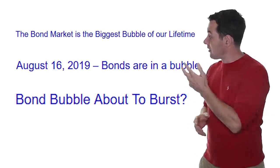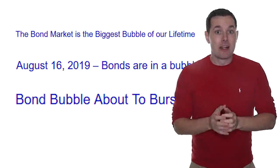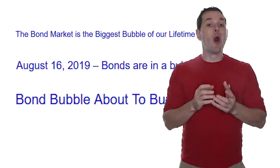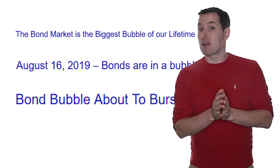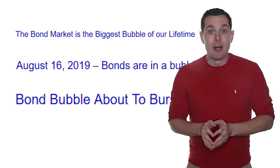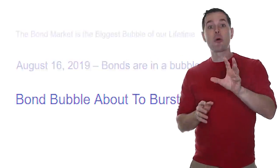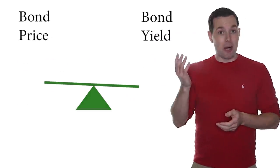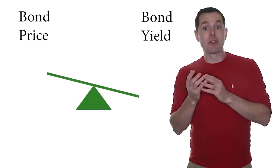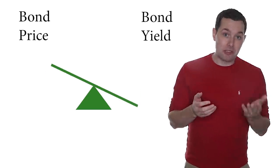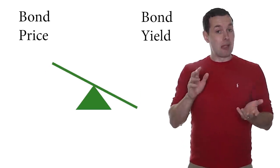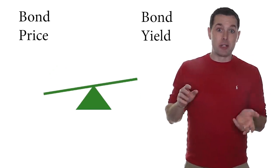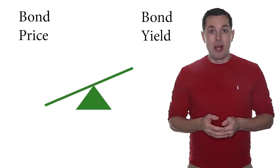Now I'm sure we've all seen headlines like this, and I'm sure that most of us know the way that bond pricing works. But just so we're all on the same page — when the price of a bond goes up, the yield of that bond goes down, and the same is true the other way around. When yields go up, the price of the bond goes down.